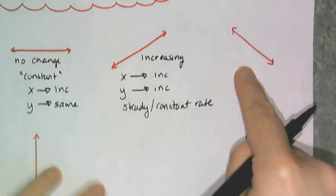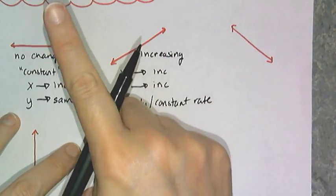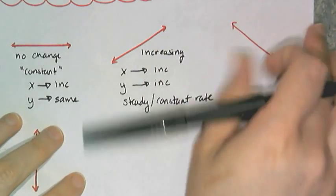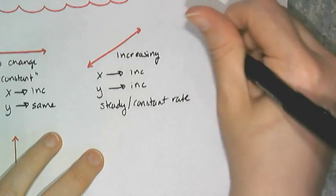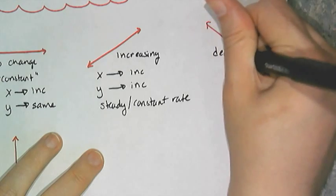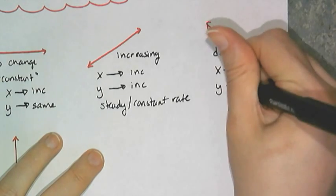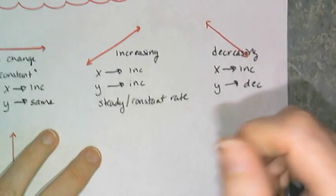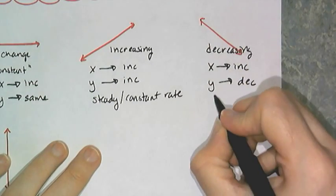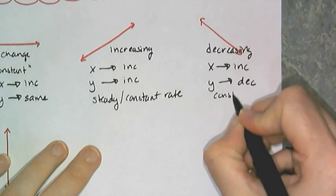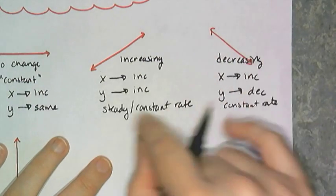Now if we look over here, this graph, and by the way, graphs are always read from left to right. This graph would then be decreasing, because as X increases, Y is decreasing. And also the rate thing is the same. It is a constant rate here. That's what straight lines give you is they give you constant rate.